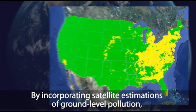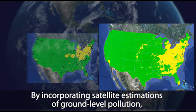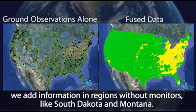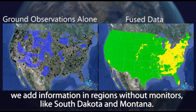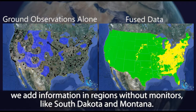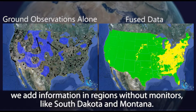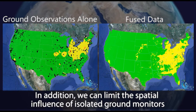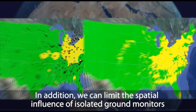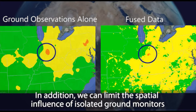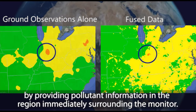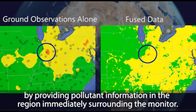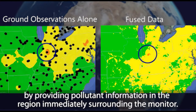By incorporating satellite estimations of ground-level pollution, we add information in regions without monitors, like South Dakota and Montana. In addition, we can limit the spatial influence of isolated ground monitors by providing pollutant information in the region immediately surrounding the monitor.